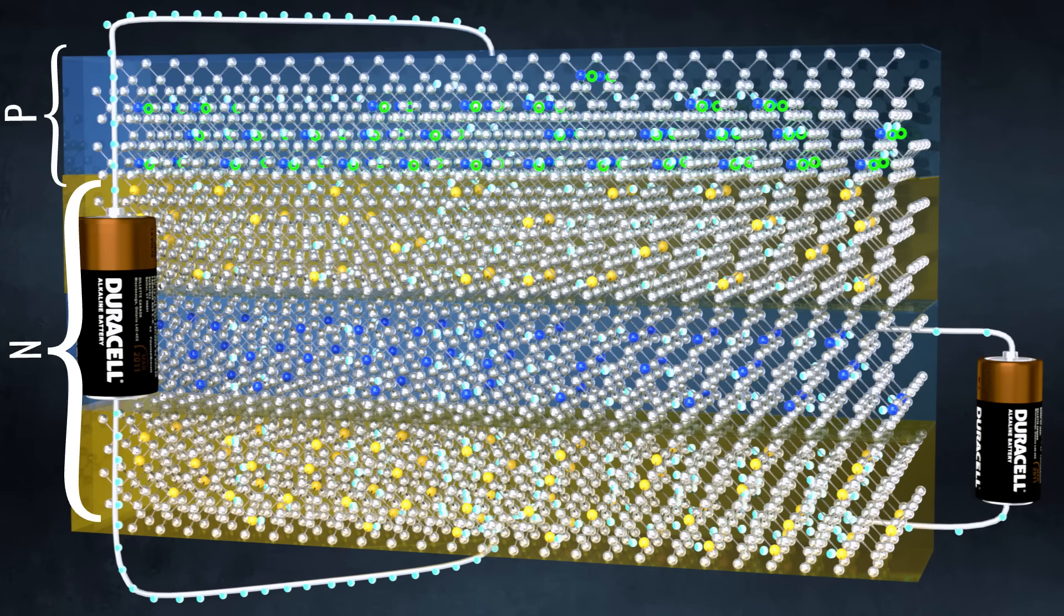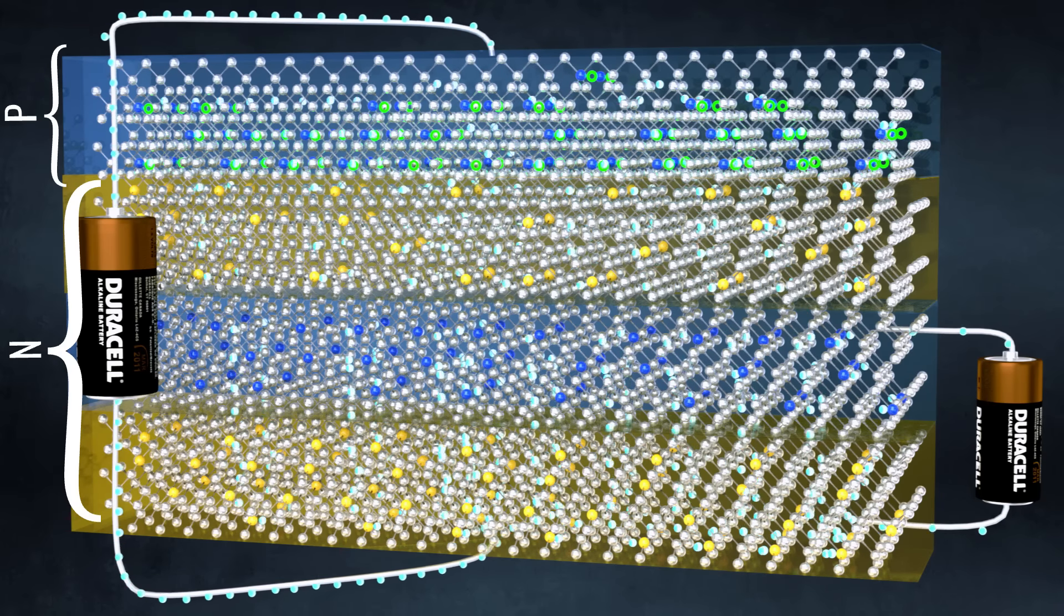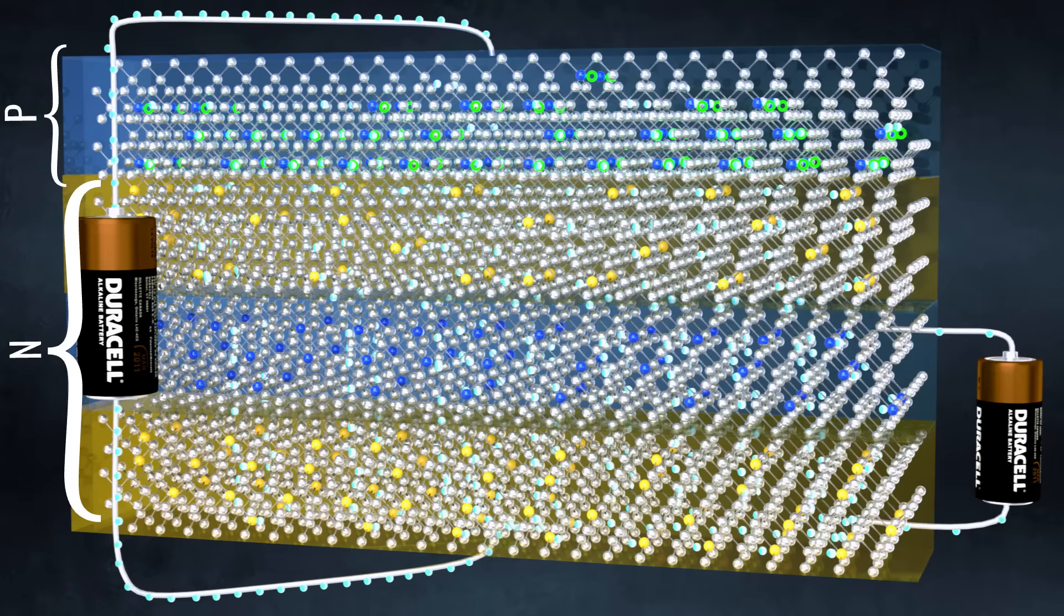As we have seen earlier, when we apply a forward bias voltage supply to the p-n junction diode, it starts conducting.